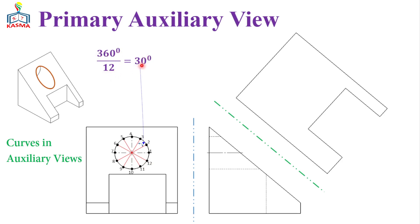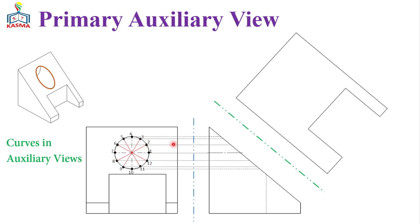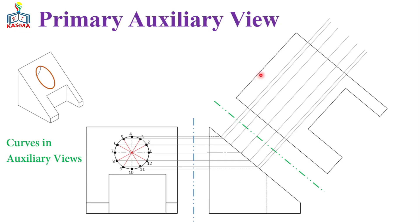Let's divide this into 12 parts. 360 divided by 12 equals 30 degrees, so each sector will have a 30-degree measurement. The divisions will be in this way, giving us 12 equal sectors. Now we can draw a construction line from each point to the inclined surface of the view. Points 3 and 5, 2 and 6, 1 and 7, 12 and 8, 9 and 11 are just on the same line. Then we can draw construction lines perpendicular to this edge, extended from these lines.